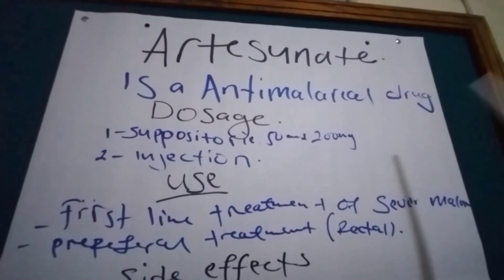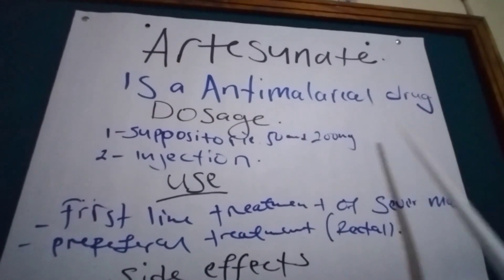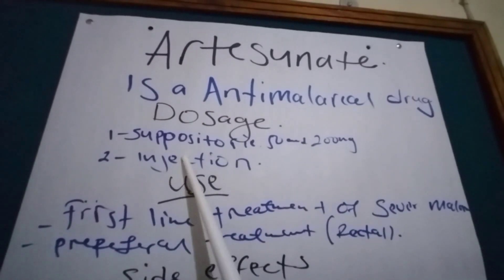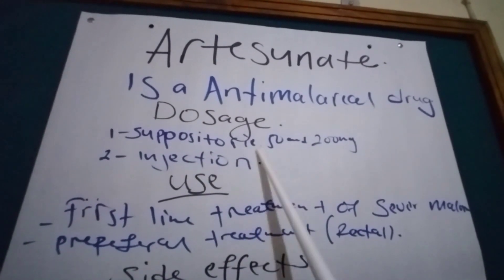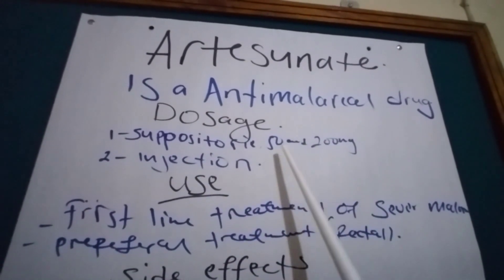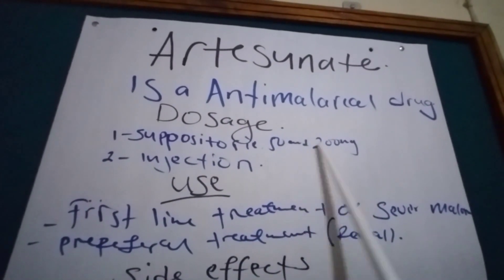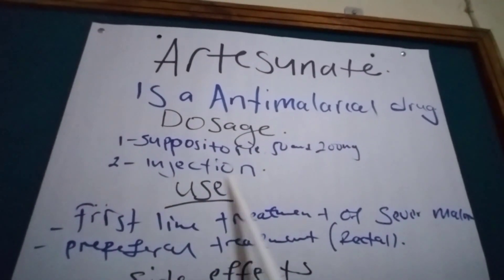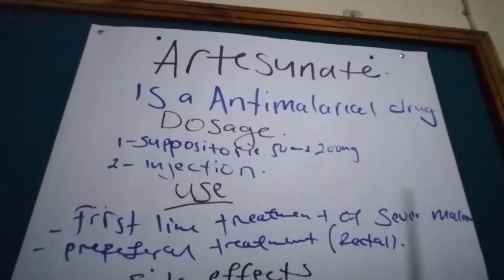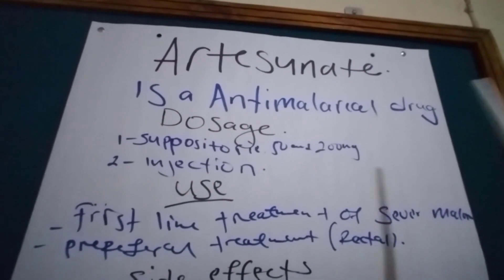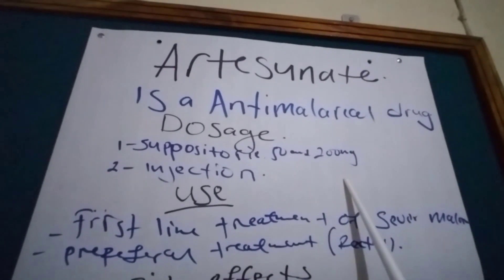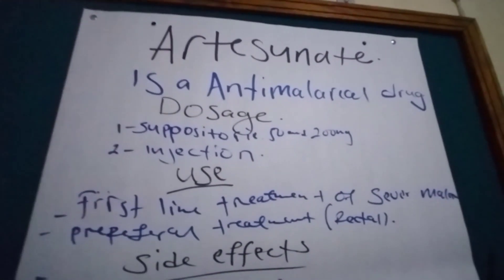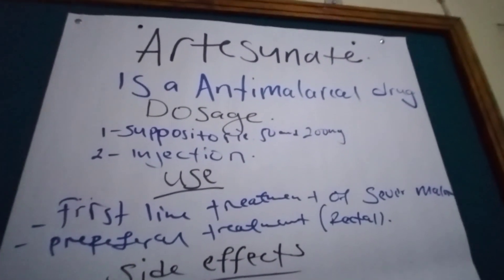What are the preparational dose forms? It is prepared in the form of pessaries — 50 and 200 milligrams — and then injection, and there is also a tablet of Artesunate, though I have not personally seen the tablet form.